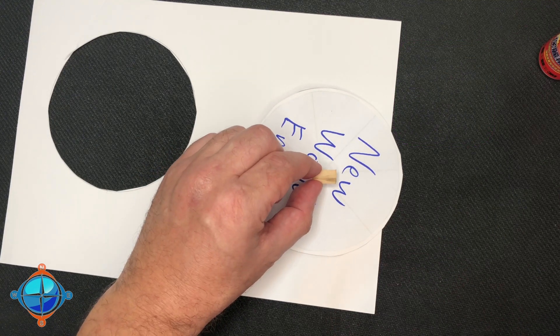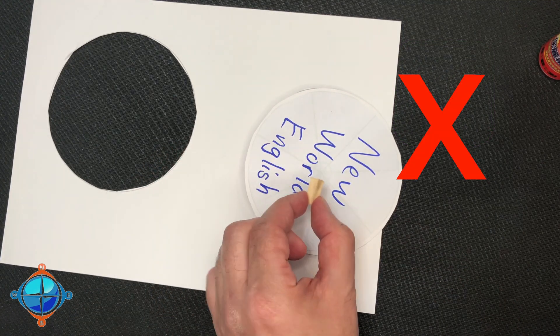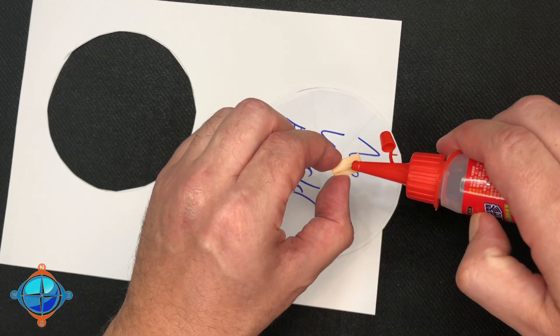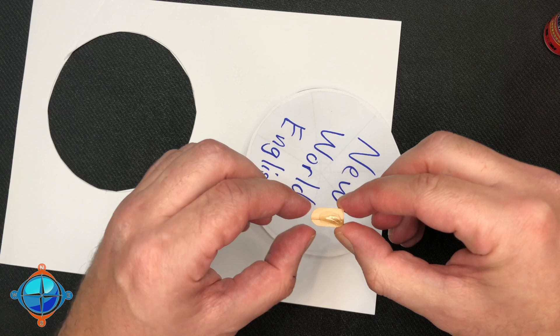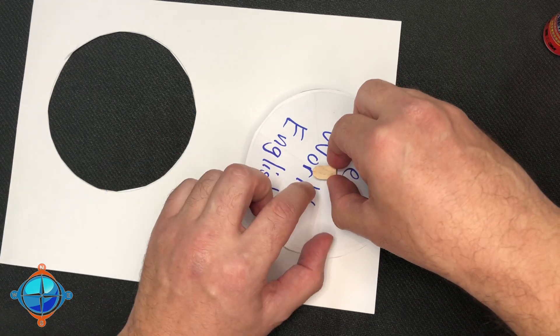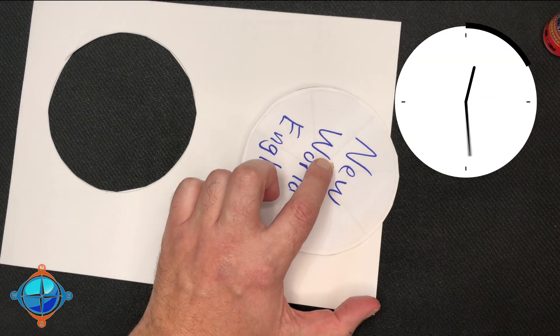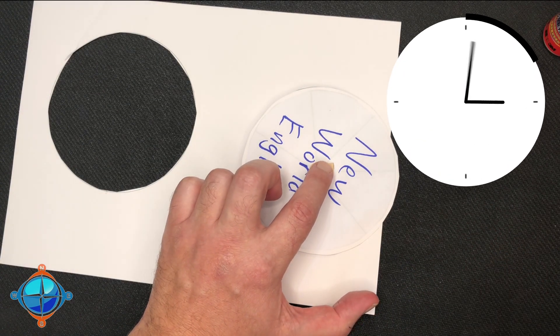So if that one I put it down like that, you cannot do this. They need to go the same way. Put some glue on this one. So you want to make sure it goes right on top of the other one. You want to push it, you want to hold it down, wait for the glue to dry.